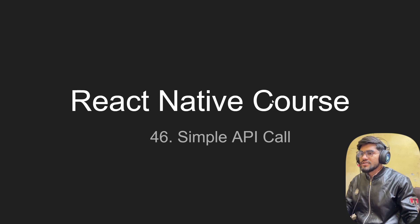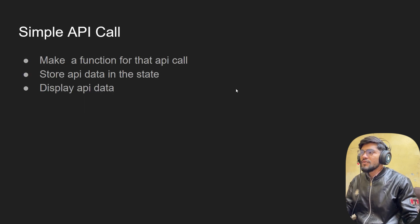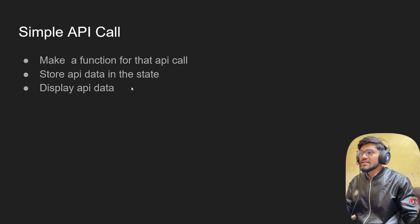Hey guys, welcome back to the React Native course. In this video we are going to talk about how to make a simple API call in React Native. We're gonna make a function, call the API using the fetch method, store the data in a state, and display that data. Now let's understand what an API is — an API is a way to talk with the database.